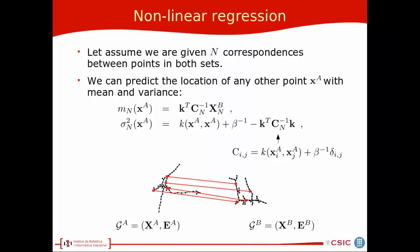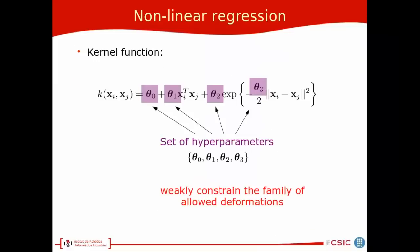Particularly, we will choose the kernel function, which is composed by a linear plus a squared exponential kernel. This implicitly defines a mapping function composed by a linear plus a nonlinear transformation. The set of hyperparameters appearing in the kernel function vaguely constrain the family of allowed deformations. So given this expression for the kernel function, the main prediction can be rewritten as we can see in the slide, with a first term which is a linear transformation and a second term which is a nonlinear transformation.